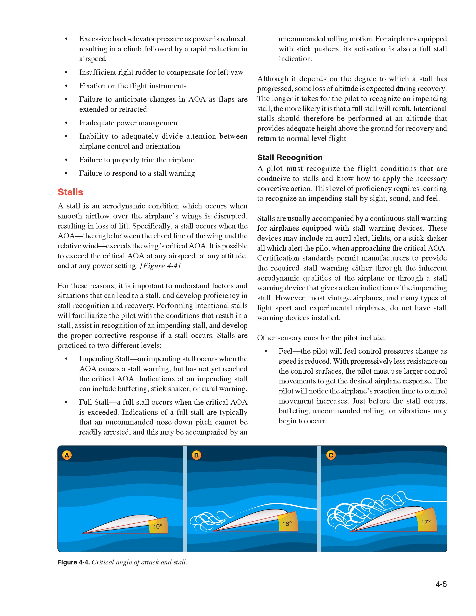Certification standards permit manufacturers to provide the required stall warning either through the inherent aerodynamic qualities of the airplane or through a stall warning device that gives a clear indication of the impending stall. However, most vintage airplanes, and many types of light sport and experimental airplanes, do not have stall warning devices installed. Other sensory cues include feel — the pilot will feel control pressures change as speed is reduced, with progressively less resistance on the control surfaces requiring larger control movements. Just before the stall occurs, buffeting, uncommanded rolling, or vibrations may begin to occur.